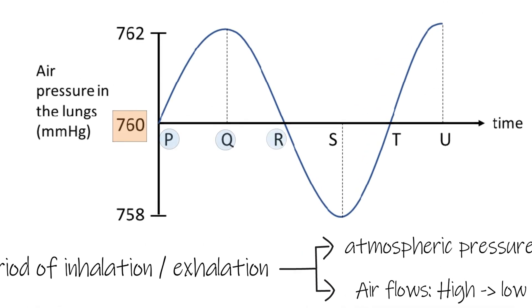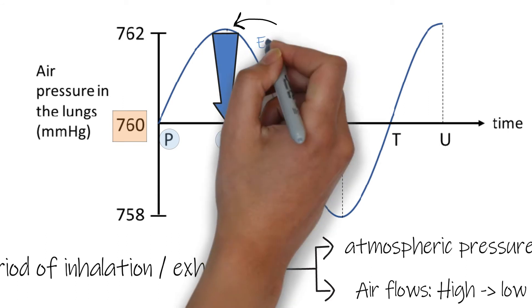In the period of PQR, the curve is above 760 mmHg. That means the lung pressure is higher than the atmospheric pressure. So the air flows out from the lungs to the atmosphere. Exhalation occurs.